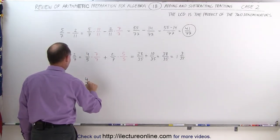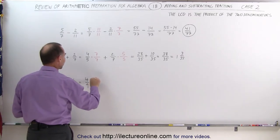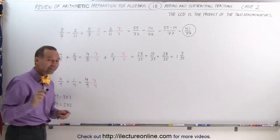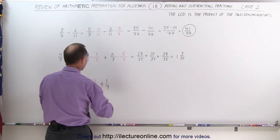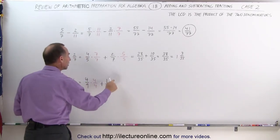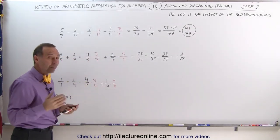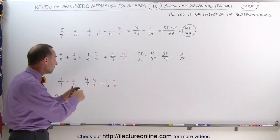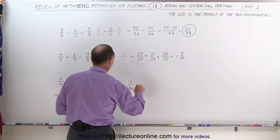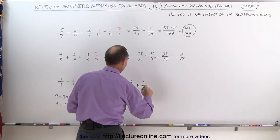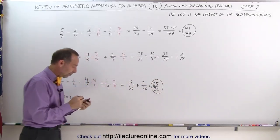The first fraction, four over nine, is multiplied by four over four — you multiply both the numerator and the denominator by the denominator of the other fraction. Then add the second fraction, one over four, multiplied by nine over nine. When you multiply fractions, multiply the numerators together and multiply the denominators together: four times four is sixteen, divided by four times nine which is thirty-six, plus nine times one which is nine, divided by four times nine which is thirty-six. That gives you twenty-five divided by thirty-six, which is the final answer. You cannot simplify that any further.